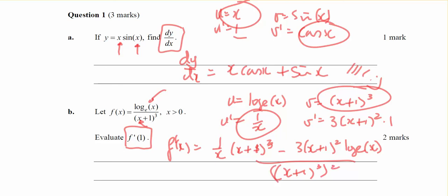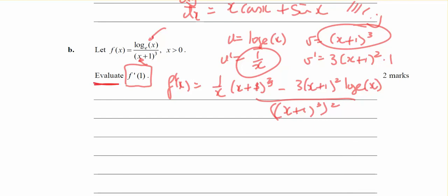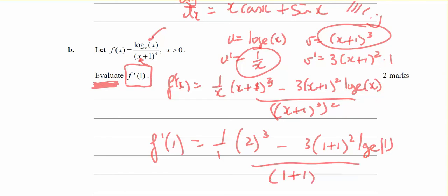Now I don't need to simplify it, I just need to work out the evaluation when x equals 1. So f dash of 1 will be 1 on 1 times 1 plus 1, that's 2 cubed, minus 3 times 1 plus 1 squared times log base e of 1, all over 1 plus 1 to the power of 6.